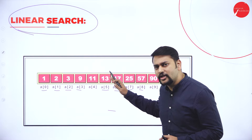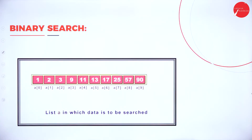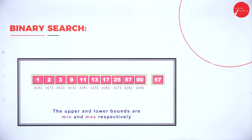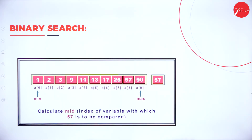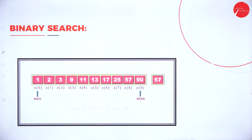So what exactly is the drawback of linear search? I need to compare one by one with all the values — that's what makes it a linear search. Now let me show you the simulation for binary search. Here I need to find 57. Using binary search, I will be calculating the upper bound (max) and lower bound (min), and from those I will calculate the mid value.